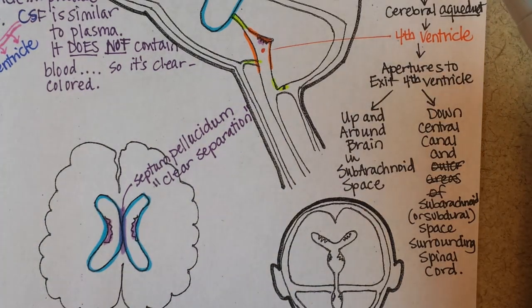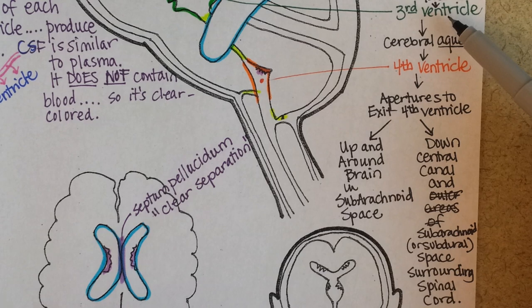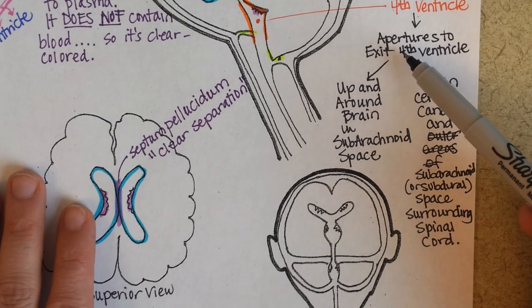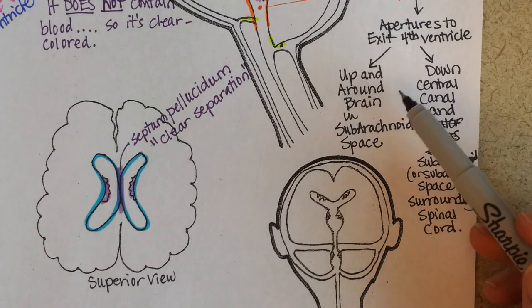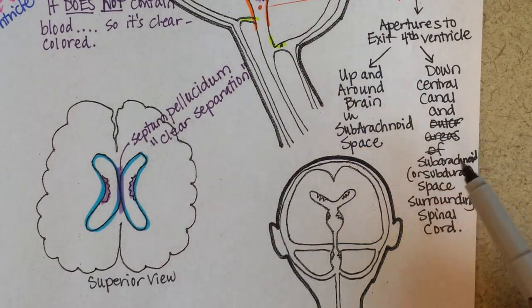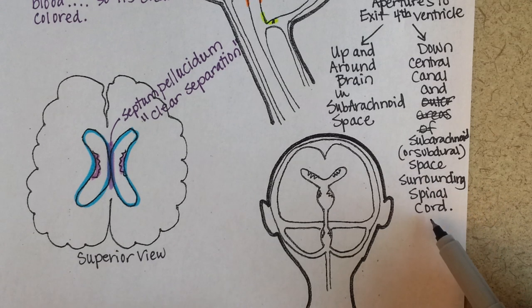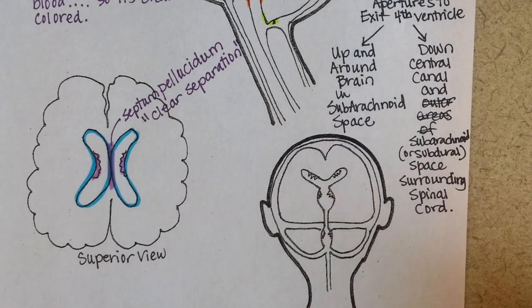To recap: cerebrospinal fluid is constantly being formed in the lateral ventricles, the third ventricle, and the fourth ventricle. It flows from the lateral ventricles down to the third ventricle, and from there down to the fourth ventricle, at which point it exits apertures. Due to a little bit of fluid pressure, some goes up and all the way around the brain in the subarachnoid space, and some goes down the central canal and circulates in the subarachnoid space surrounding the spinal cord. If someone has a lumbar puncture, they're removing some of that CSF from that region.